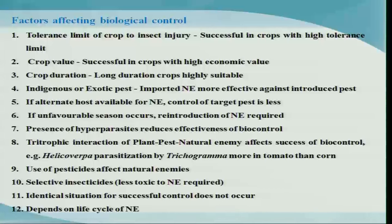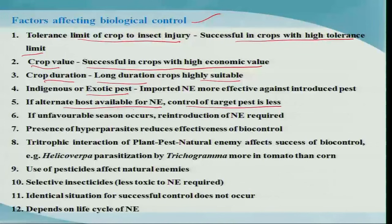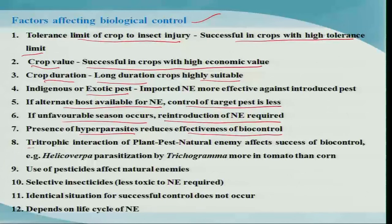Factors affecting the biocontrol program include the tolerant limit of the crop to insect injury — it is most successful in crops with a high tolerance limit. Crop value and crop duration also matter; longer-duration crops show better success. Biocontrol agents work well against exotic pests. If alternative hosts are available for natural enemies, control of the target pest will be reduced, so agents should be quite species specific. In case of unfavorable seasons, reintroduction of natural enemies is required, and the presence of hyperparasitoids sometimes reduces effectiveness. Tritrophic interactions among plant, pest, and natural enemy can also affect the success of biocontrol agents.